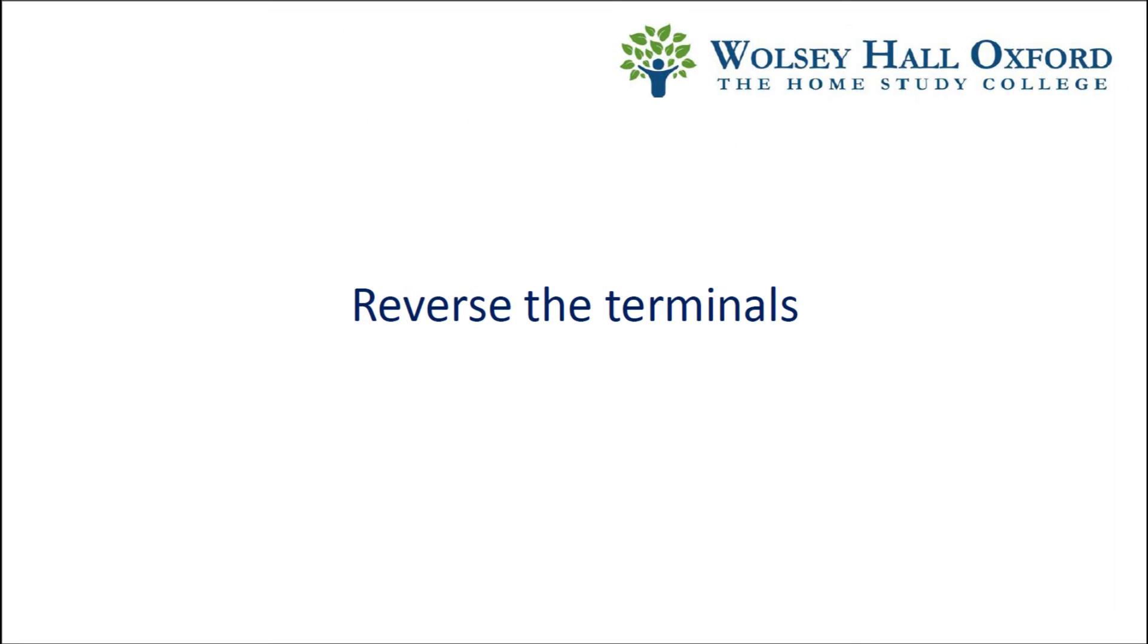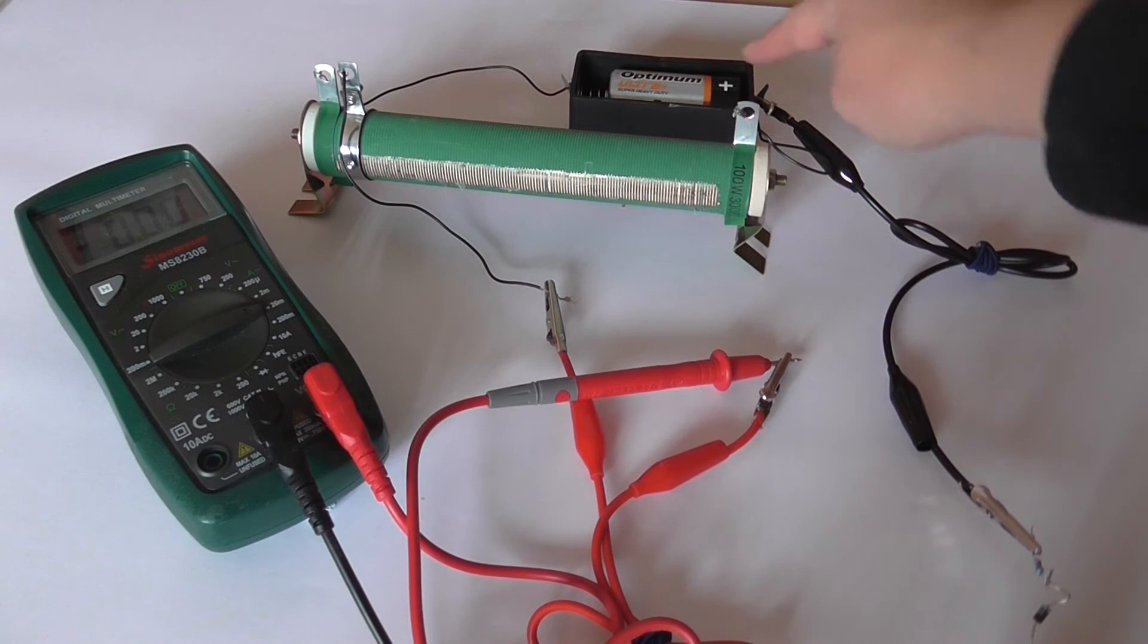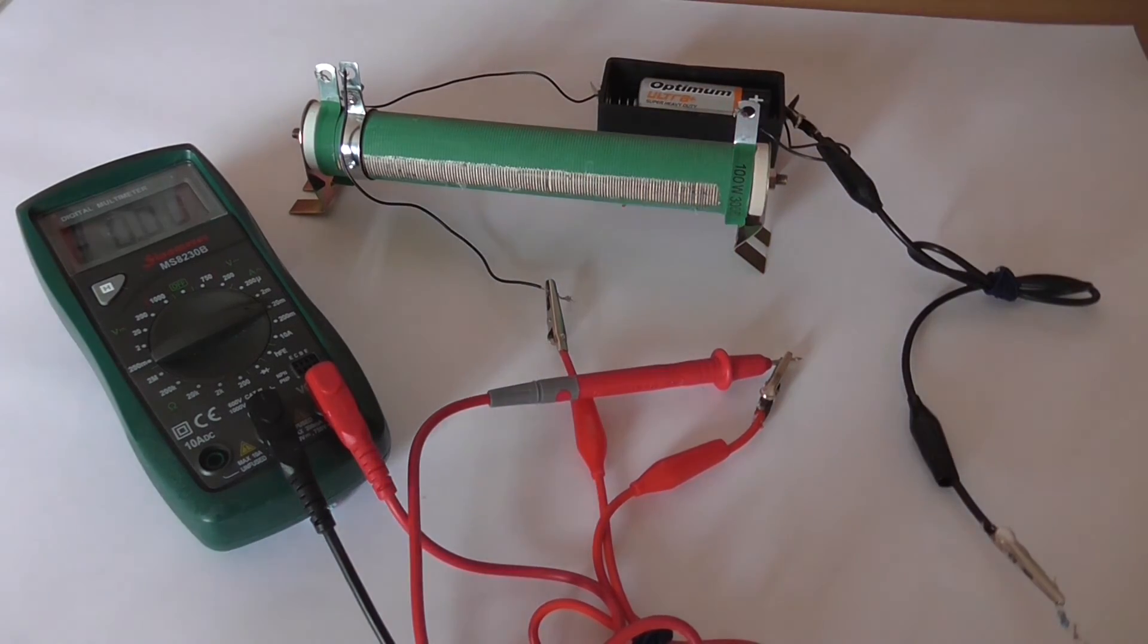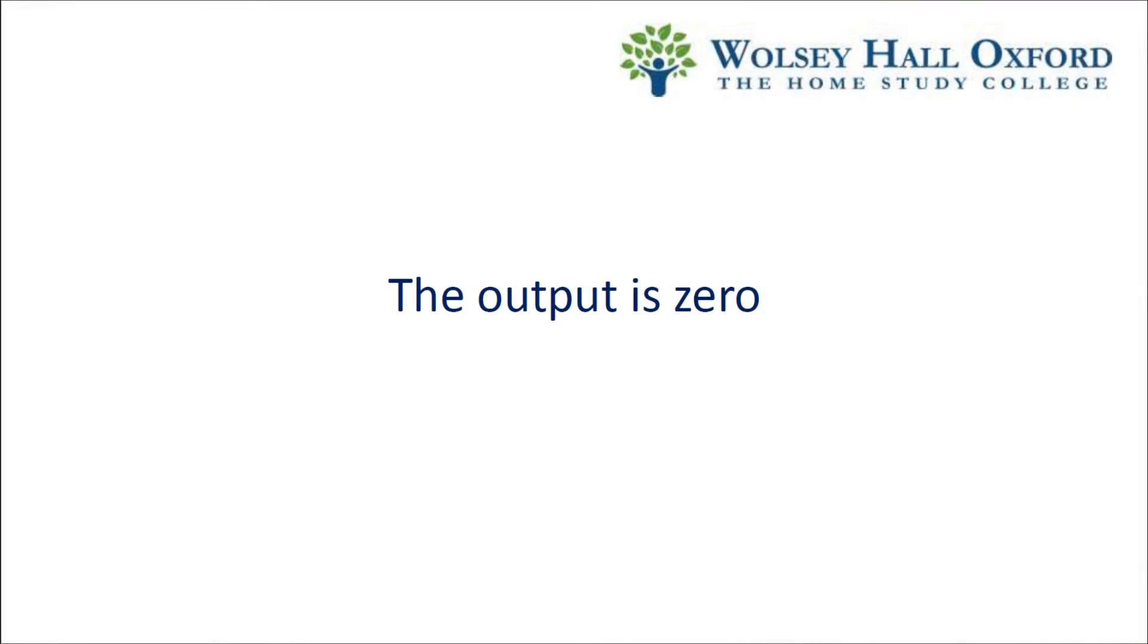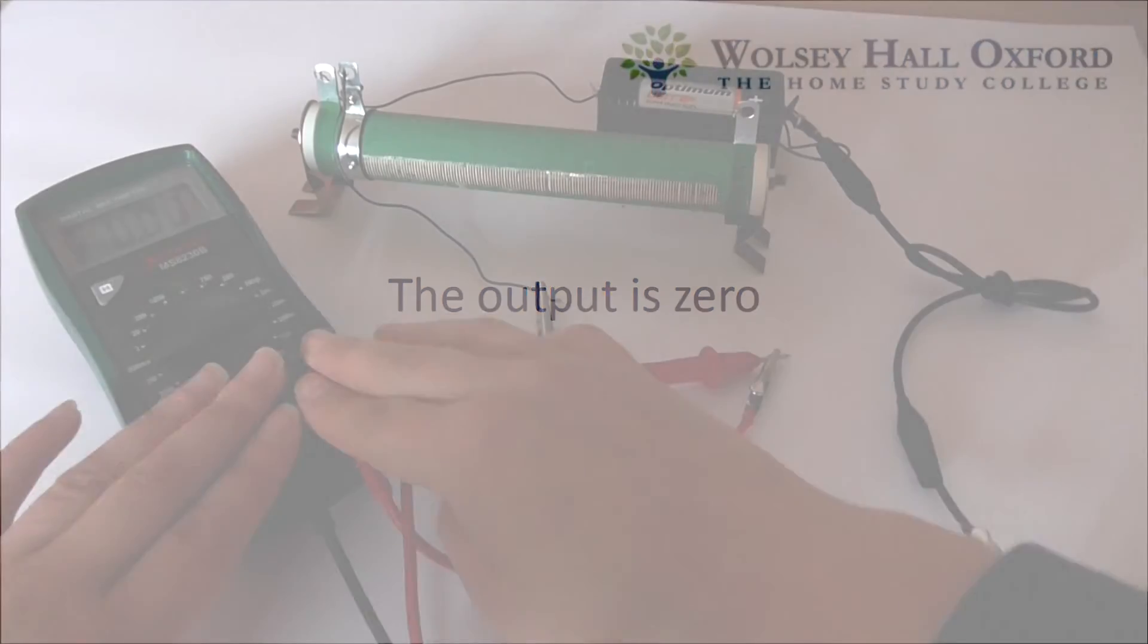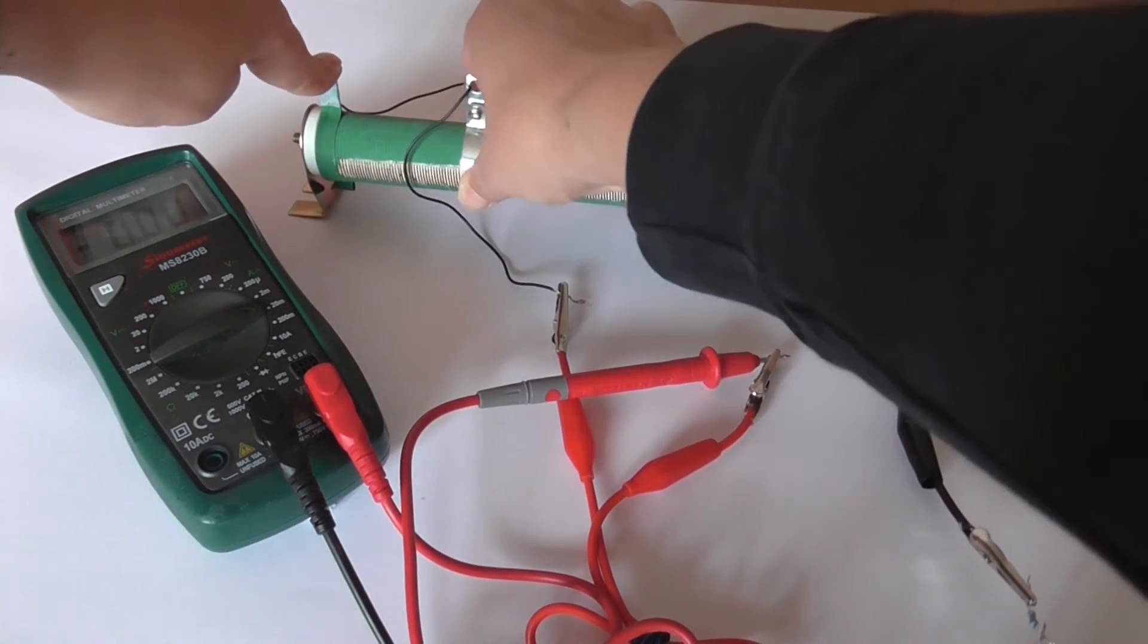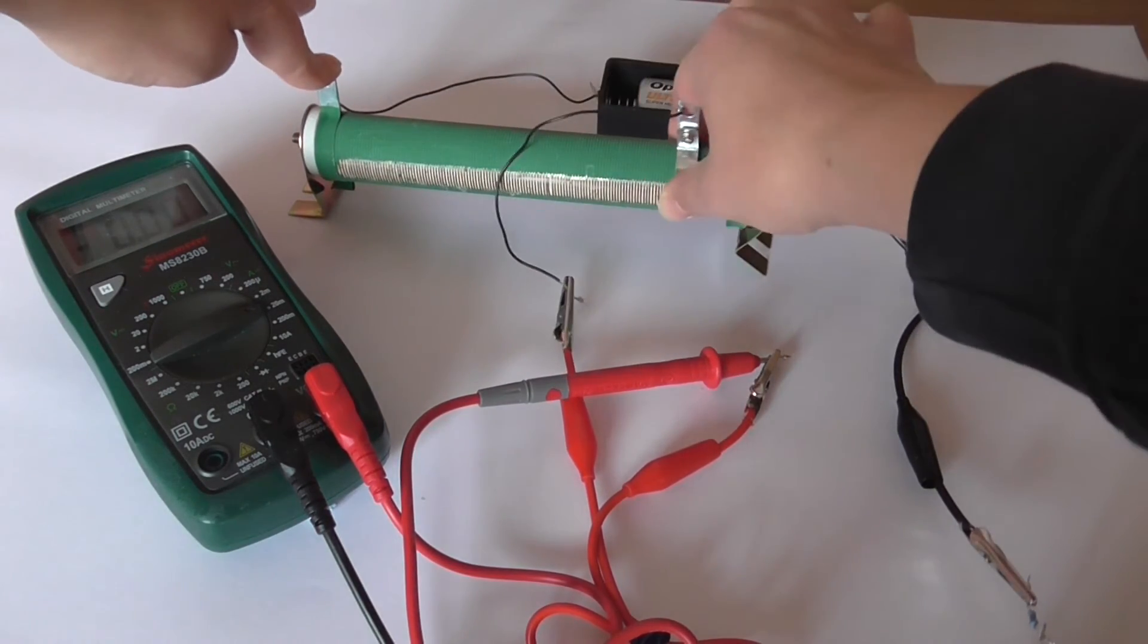Let's see what happens when we reverse the terminals. Here's the positive terminal. And the ammeter reading is 0, even though it's at the maximum voltage. You can see moving the slider makes no difference. The ammeter reading is still 0.